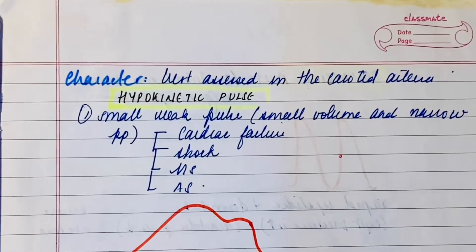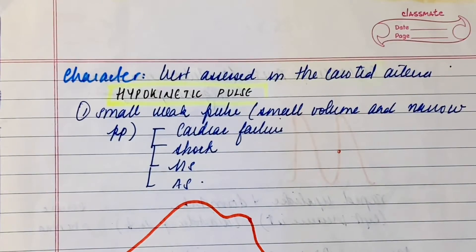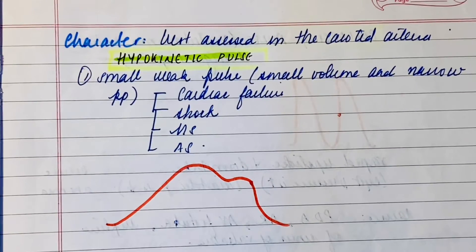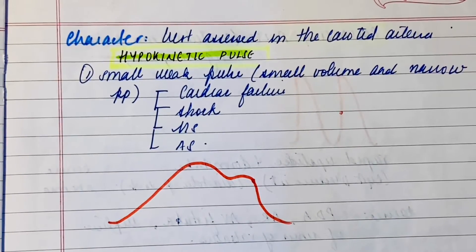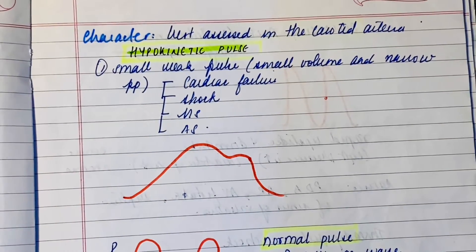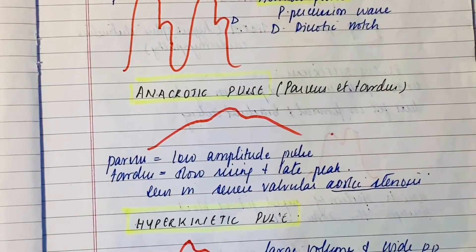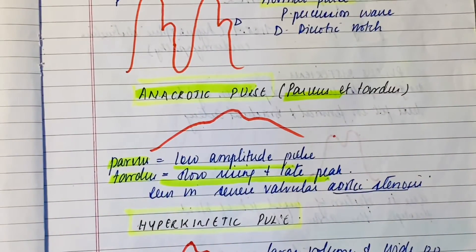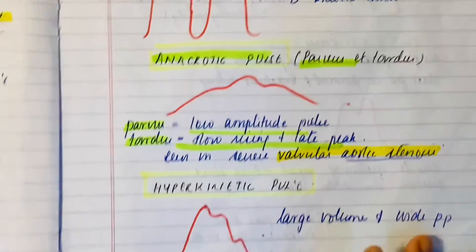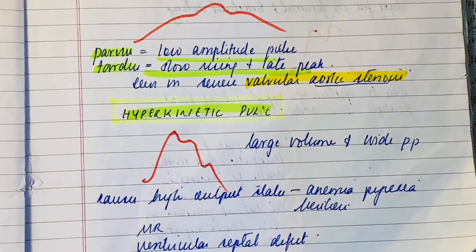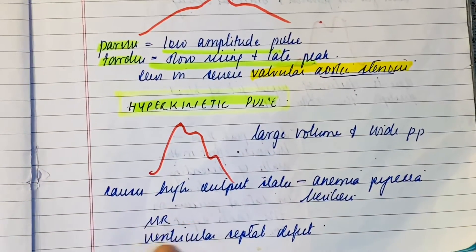The character of the pulse is best assessed in the carotid arteries. A hypokinetic pulse is a small, weak pulse with small volume and narrow pulse pressure, seen in cardiac failure, shock, mitral stenosis, and aortic stenosis. The anacrotic pulse (parvus et tardus — low amplitude, slow rising, late peak) is seen in severe valvular aortic stenosis. A hyperkinetic pulse has large volume and wide pulse pressure, caused by high output states such as anemia, pyrexia, beriberi, mitral regurgitation, and ventricular septal defect.